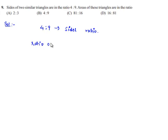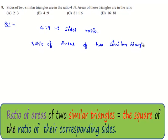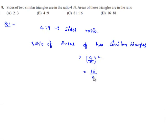We know that ratio of areas of two similar triangles is nothing but square of ratio of sides. That is 4 by 9 whole square, which is equal to 4 square is 16 by 9 square is 81.